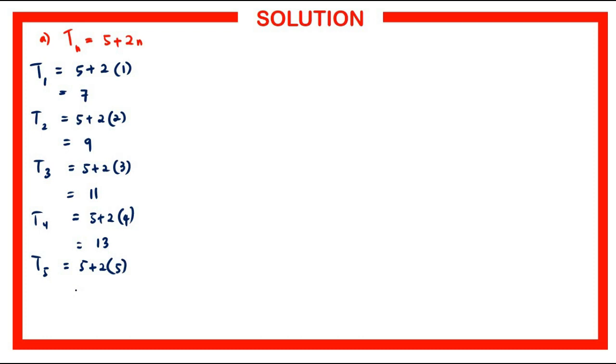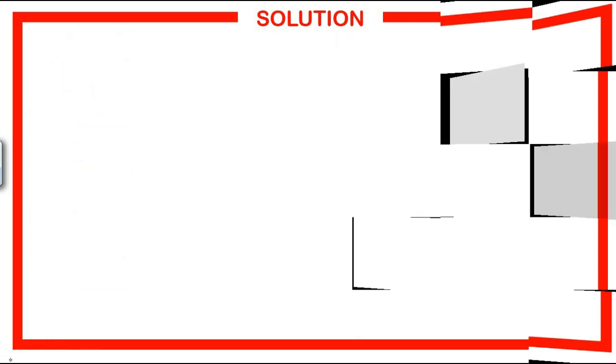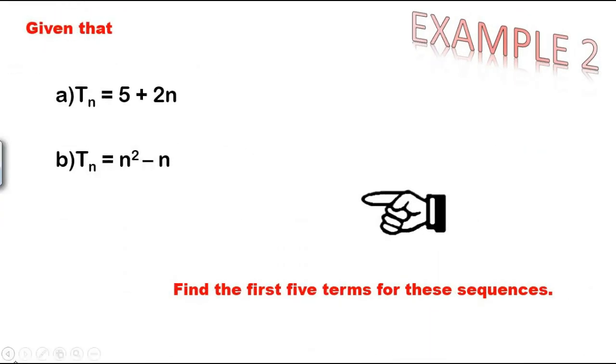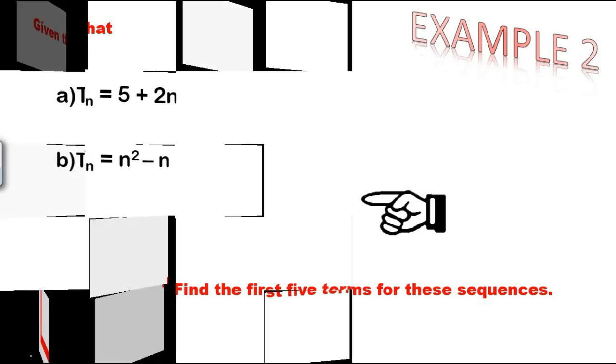For part b, I would love you to do it by yourself, given that Tn is n squared minus n. Please do this by yourself and check the answer with your lecturer.